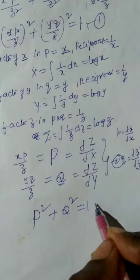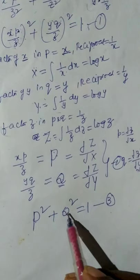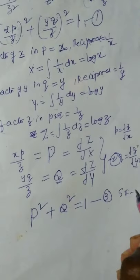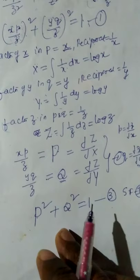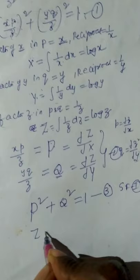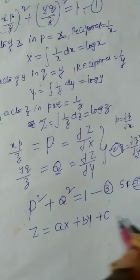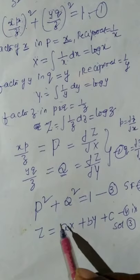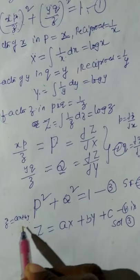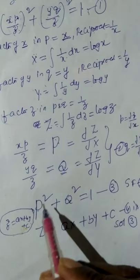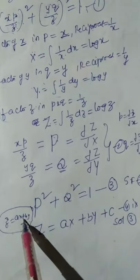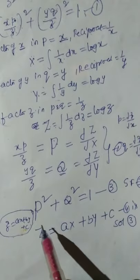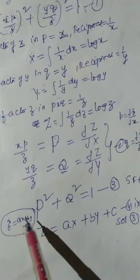We use the standard form working rule to solve this. From step 2, we consider Z = AX + BY + C as equation 4, the solution of equation 3. In working rule 1, normally z = ax + by + c is the complete solution. But in this problem, we replace small z by capital Z, small x by capital X, and small y by capital Y.